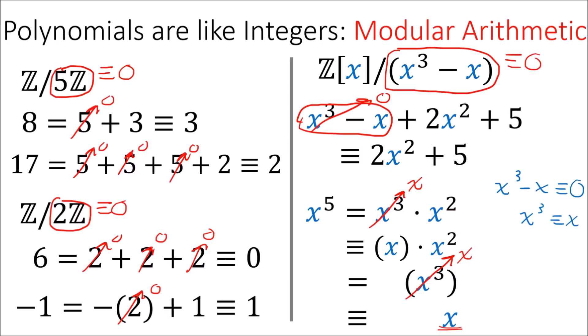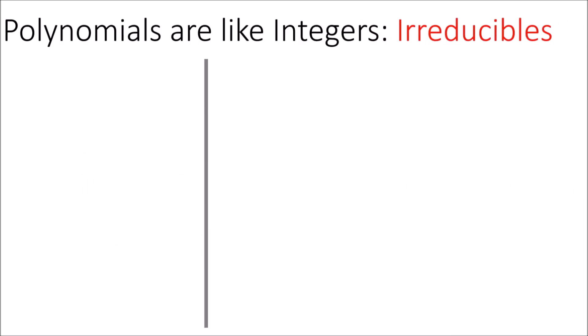So modular arithmetic with polynomials is a little more complicated than modular arithmetic with integers. But all you have to remember is that whatever is behind the slash is equivalent to 0, and if you remember that, then reducing polynomials mod some other polynomial shouldn't be that hard.